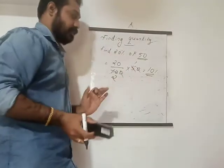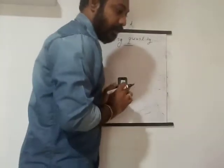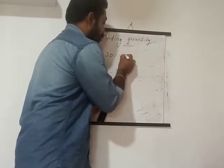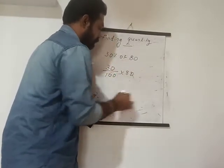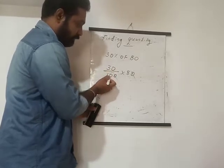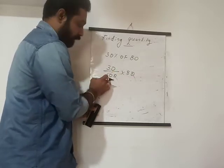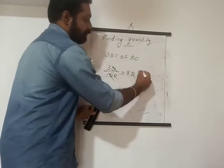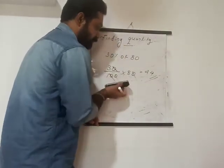This is very simple. 20% is given — very simple. One more thing: 30% of 80. For this, you write 30 by 100 into 80. Then cut the zeros: the two zeros cancel easily. Then 3 into 8 is 24, and 24 by 1 is 24. So the answer is 24. So this is simple — when something is given as a percentage, you must divide by 100.